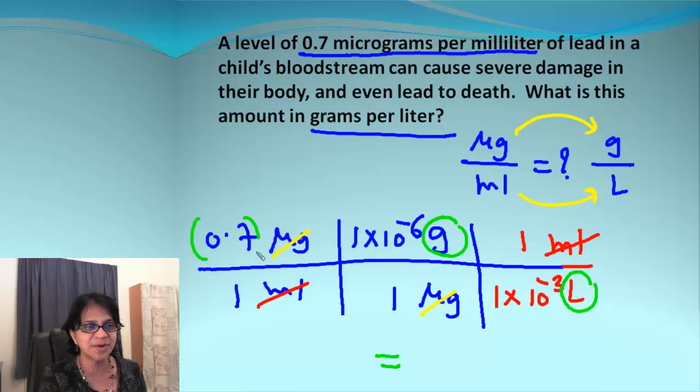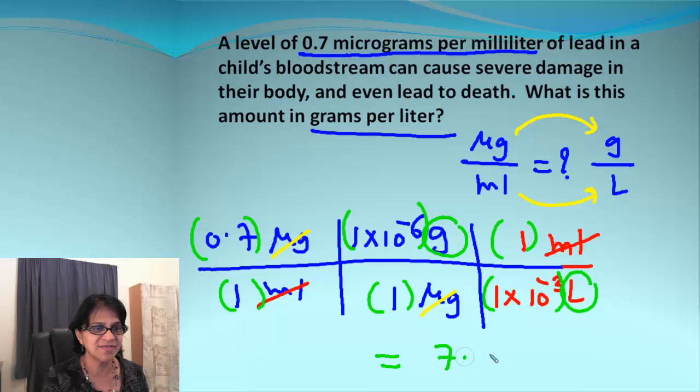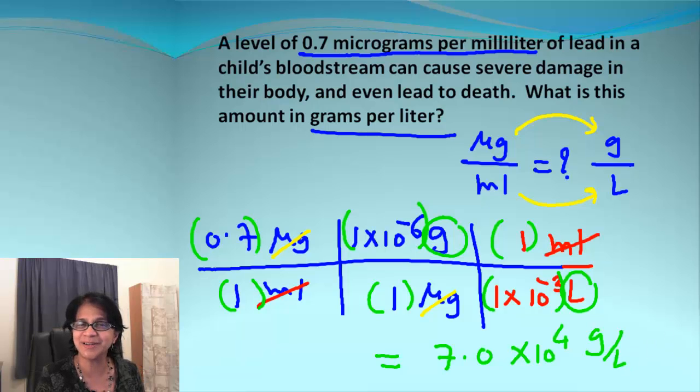You ended up having an answer grams per liter which is exactly what we desired to get. So now after we multiply all these numbers which are remaining there and then dividing by the denominator, we end up getting the answer 7.0 times 10 to the 4 grams per liter. So look at that. We completed our double conversion.